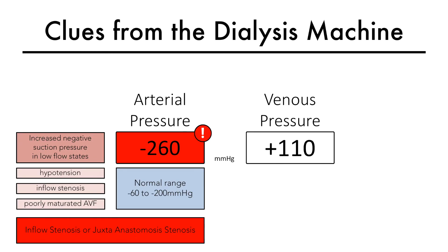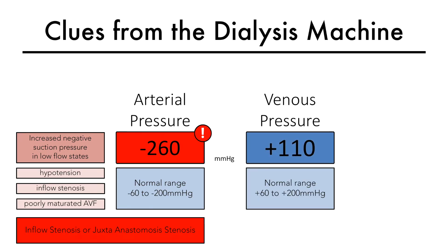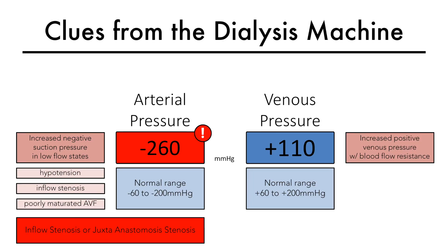The venous pressure, on the other hand, tends to be in the range of plus 60 to plus 200 millimeters of mercury, again depending on blood pump flow rate and needle size. This positive pressure is generated by the blood pump and is present throughout the post-pump circuitry. Any resistance to blood flow in the post-pump circuit will cause the venous pressures to rise, that is, become more positive.